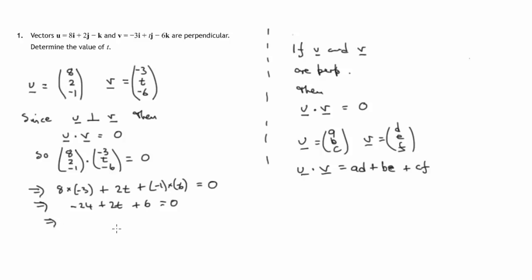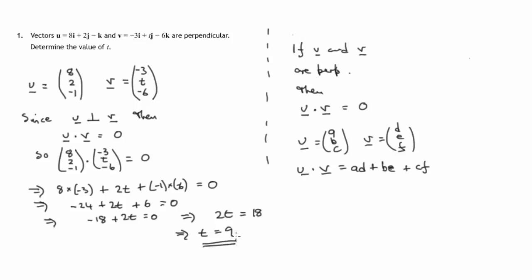Negative 24 plus 6 is negative 18, so we have 2t minus 18 equals zero. Adding 18 to both sides: 2t equals 18, therefore t equals 9. And that's the missing value that we were after.